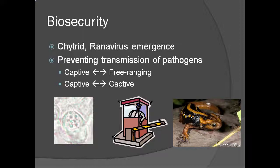Specifically, we want to protect native free-ranging animals from pathogens found in captive animals and vice versa. We will also address protecting captive amphibians from pathogens found in other captive amphibians, particularly when these groups are from different locations.